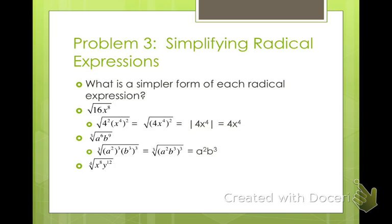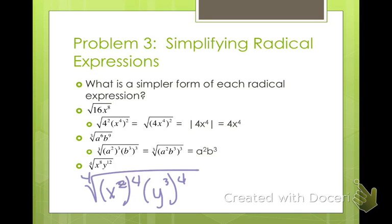The 4th root of x to the 8th, y to the 12th: x squared to the 4th power gives x to the 8th, and y cubed to the 4th power gives y to the 12th, so the answer is x squared times y cubed. Since we have a 4th root, we cannot plug in negative numbers. X squared will always be positive, but y cubed could be negative, so we have to put absolute values around y cubed. That's how the absolute value rule works.